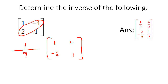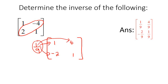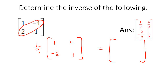Now it's like that lesson where we had a scalar on the outside of a matrix. You take that scalar and multiply it to every single element inside the matrix. So we get a final matrix of: 1/9 times 1 is 1/9; 1/9 times 4 is 4/9; 1/9 times negative 2 is negative 2/9; and 1/9 times 1 is 1/9. That is how we do the inverse.